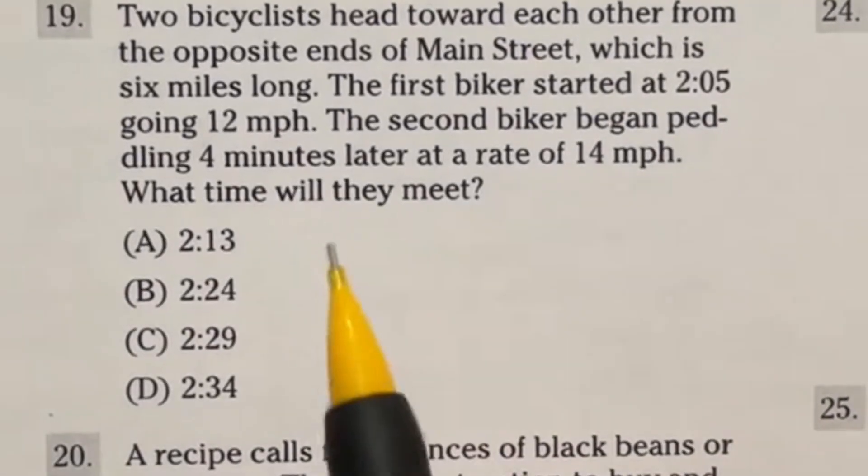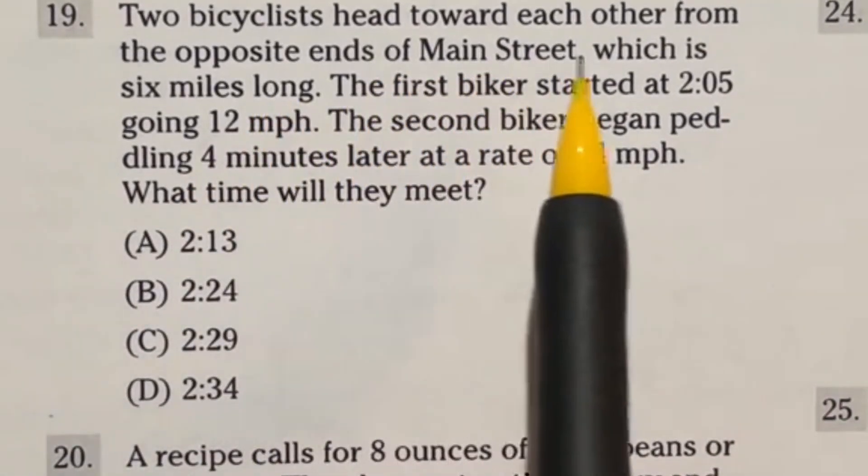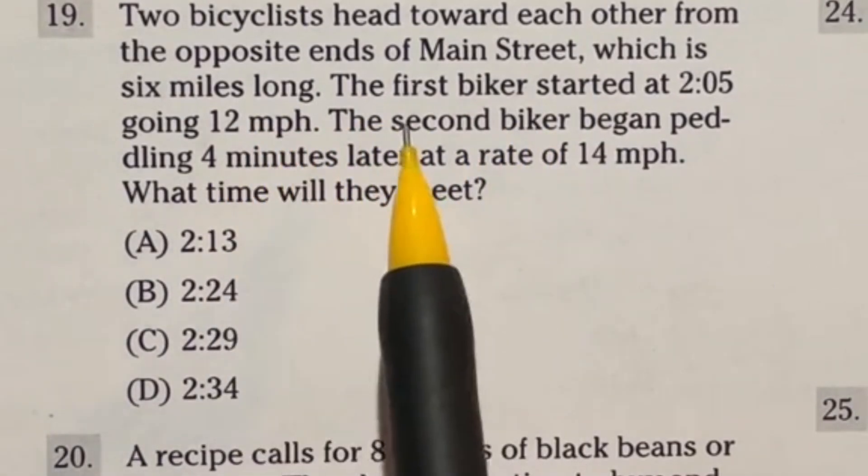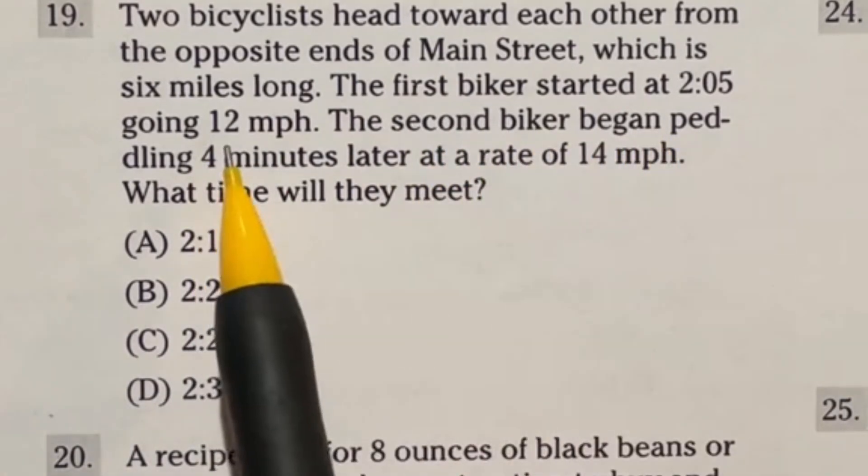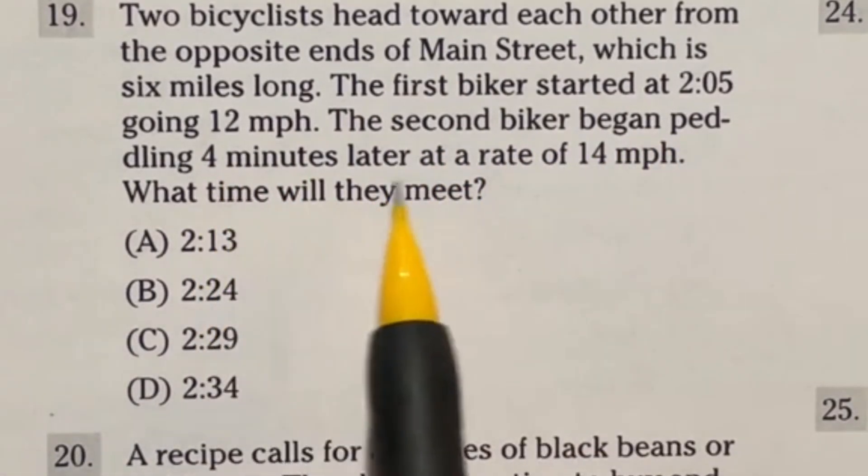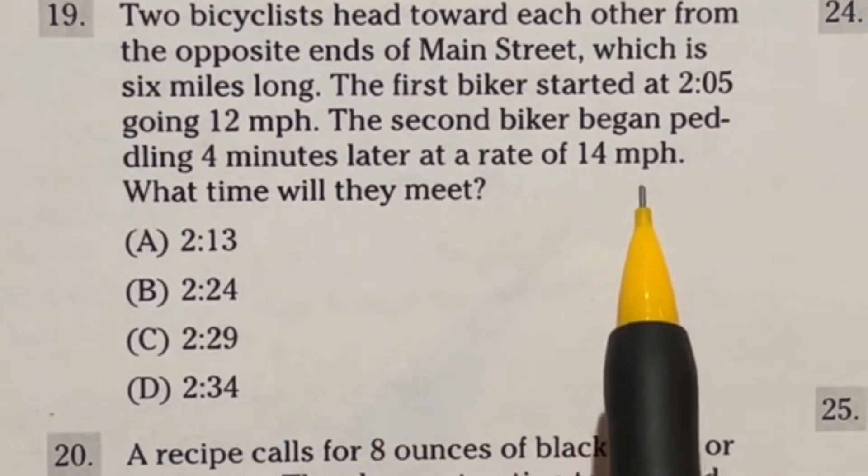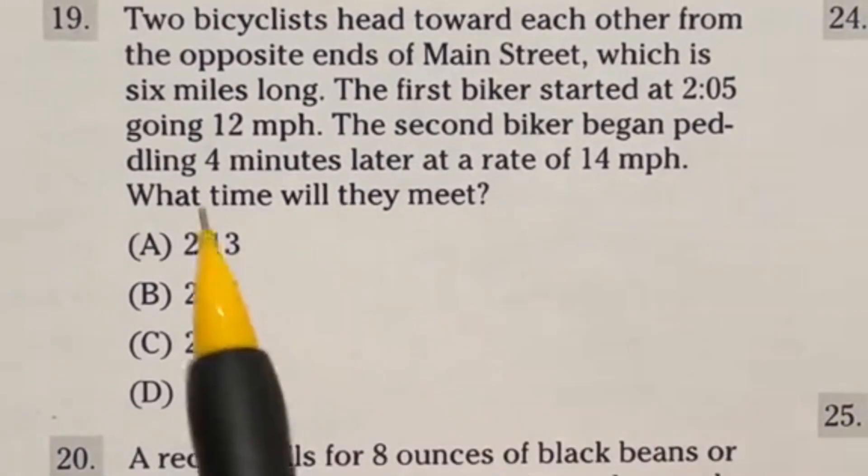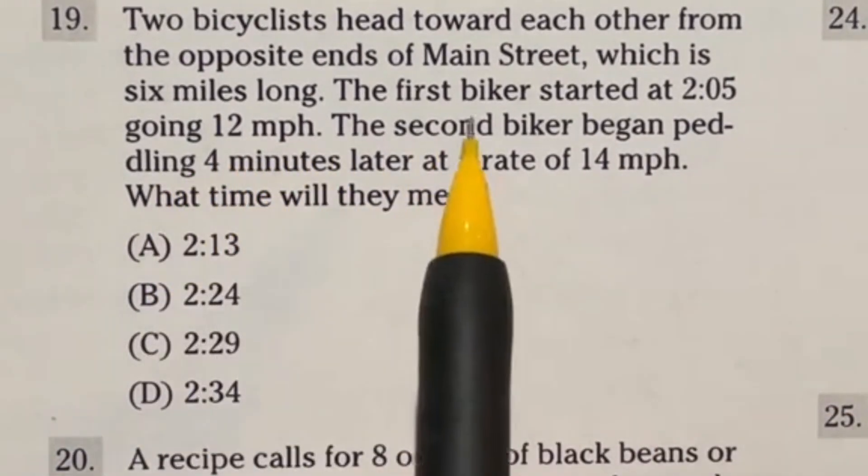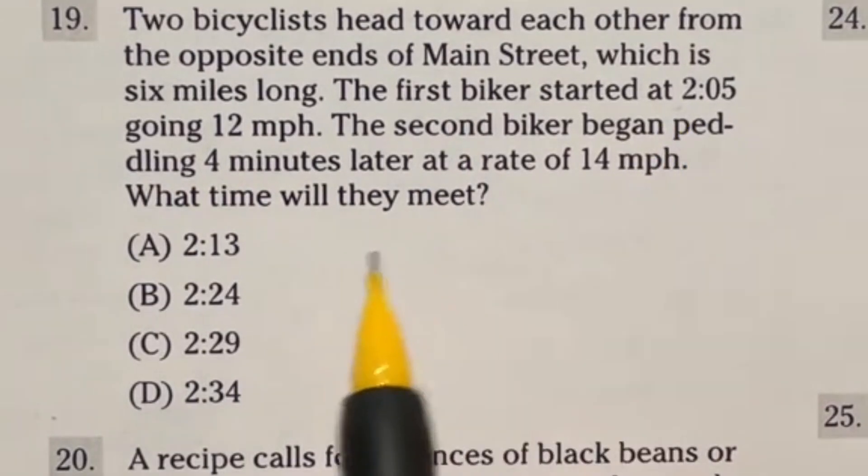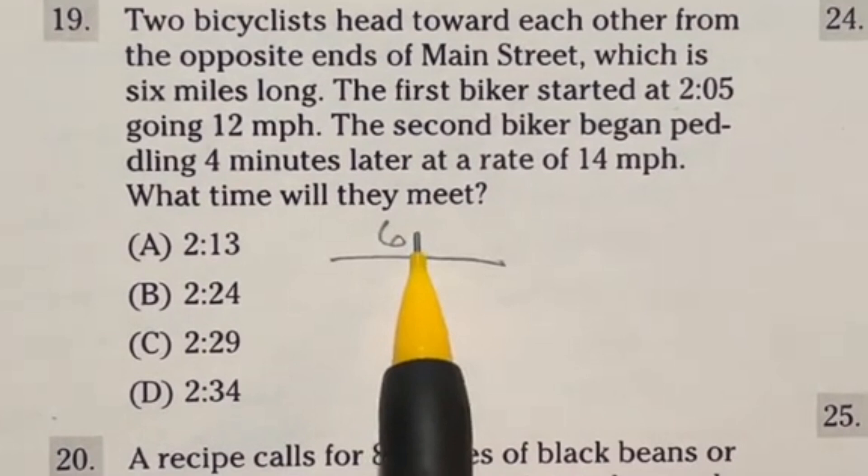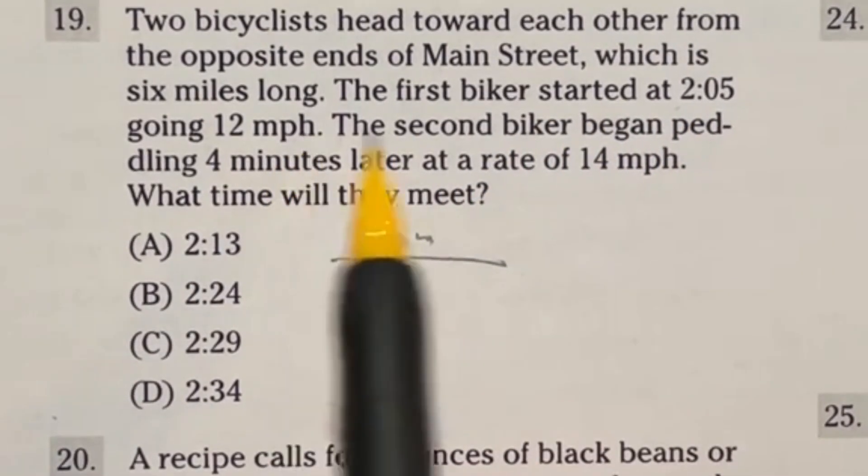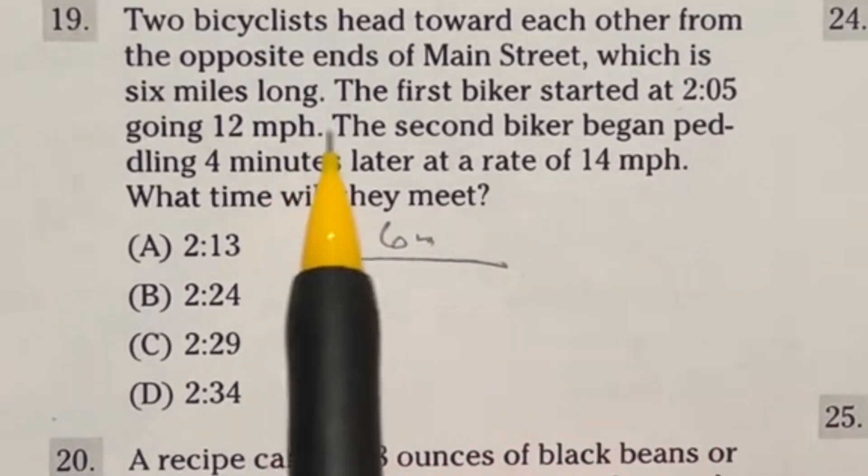The question that destroys lives. It says two bicyclists head toward each other from opposing ends of Main Street, which is 6 miles long. The first biker started at 2:05, going 12 miles per hour. The second biker began pedaling 4 minutes later at a rate of 14 miles per hour. What time will they meet? I'm going to break this down into two parts. First off, let's look at the first part here where this first biker is just riding all by himself. So we have 6 miles to cover. He's riding all by himself at 12 miles per hour, and he's starting at 2:05. But he's doing this for 4 minutes.